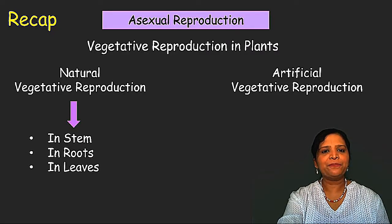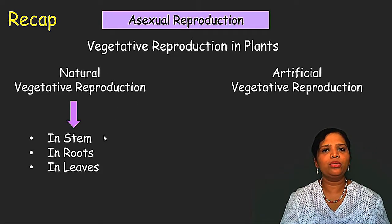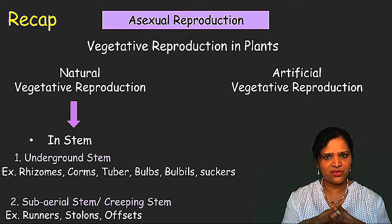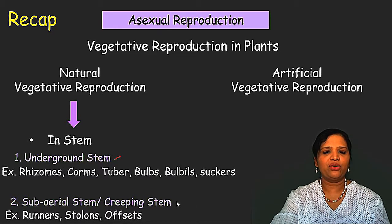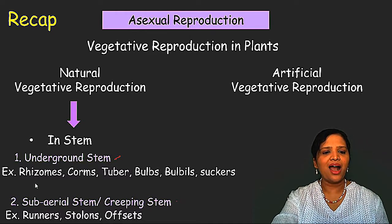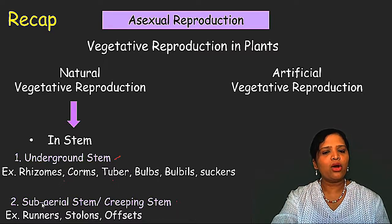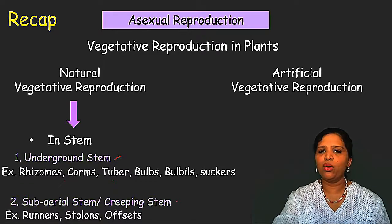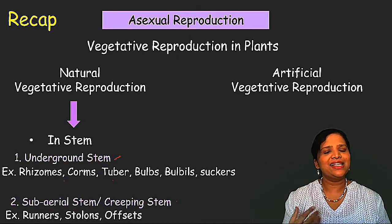Let us do the recap. In this asexual method of reproduction called vegetative reproduction in plants, we can classify it into two categories: natural and artificial. Natural method occurs by modifications in the plant stem, root, and leaves. In this lecture we studied only stem modifications, classified into underground stem modifications — rhizomes, corms, tubers, bulbs, bulbils, and suckers — and sub-aerial or creeping stem modifications — runners, stolons, and offsets. Write down each type and its examples with the clues given — it is very easy.